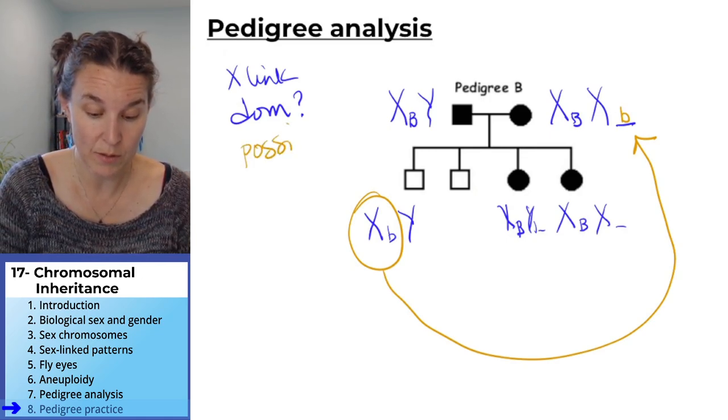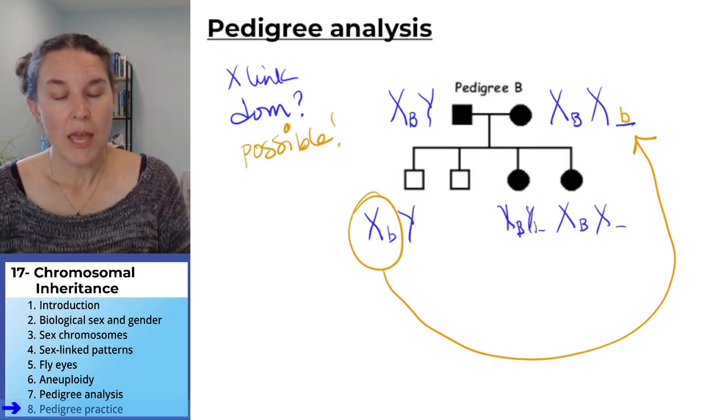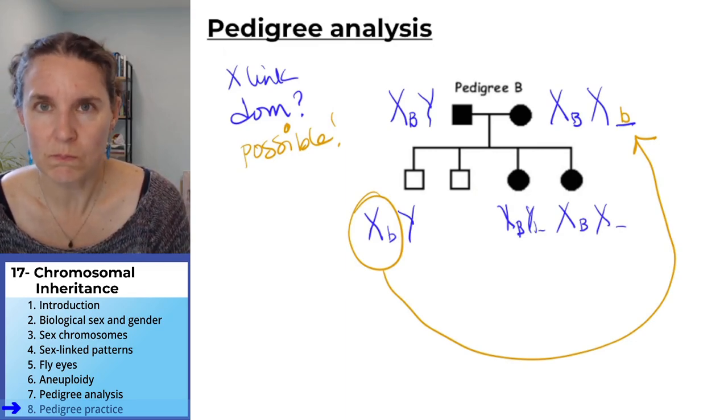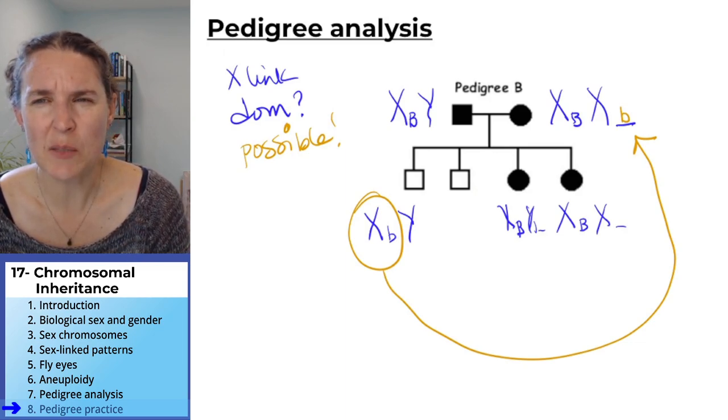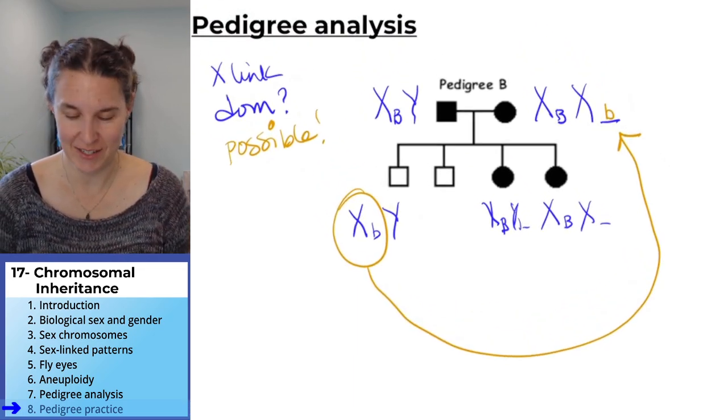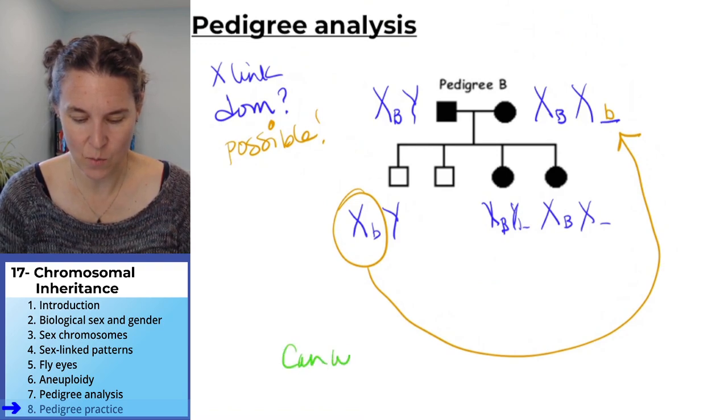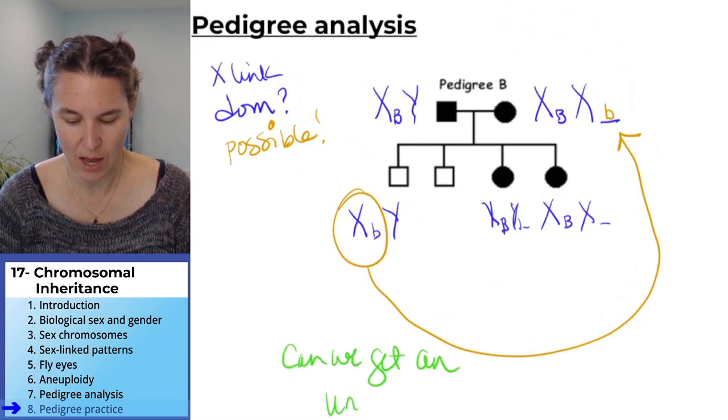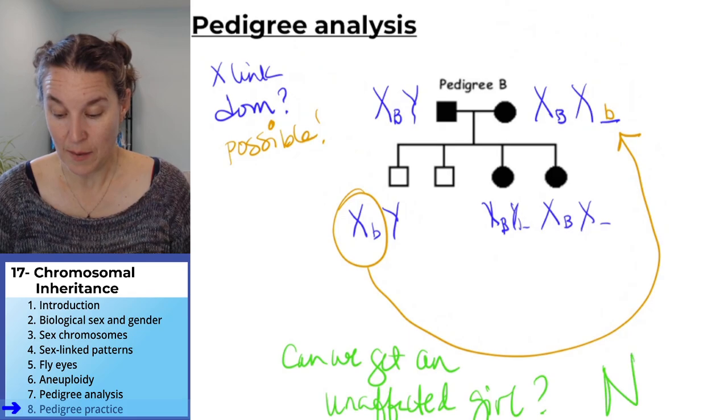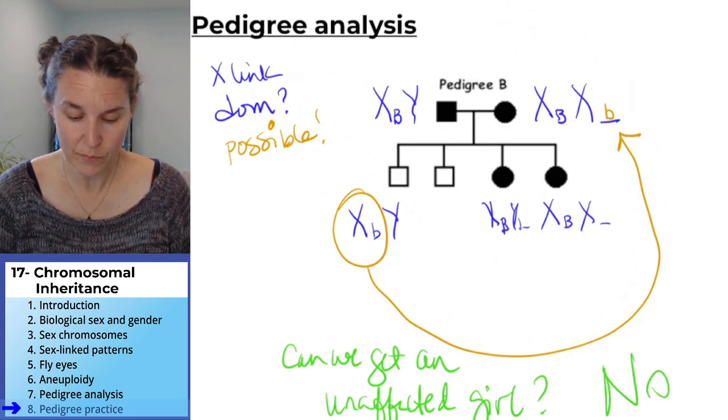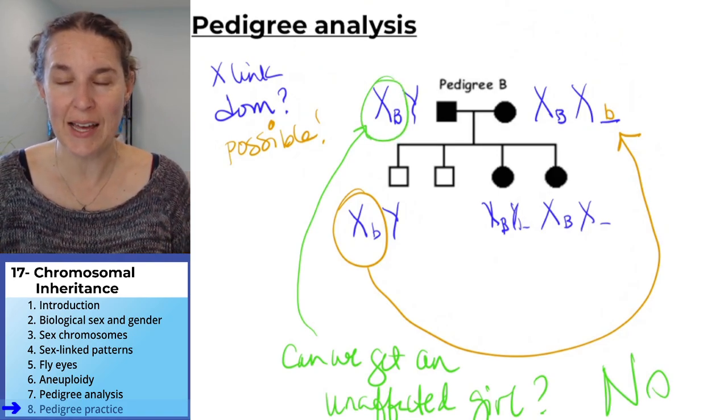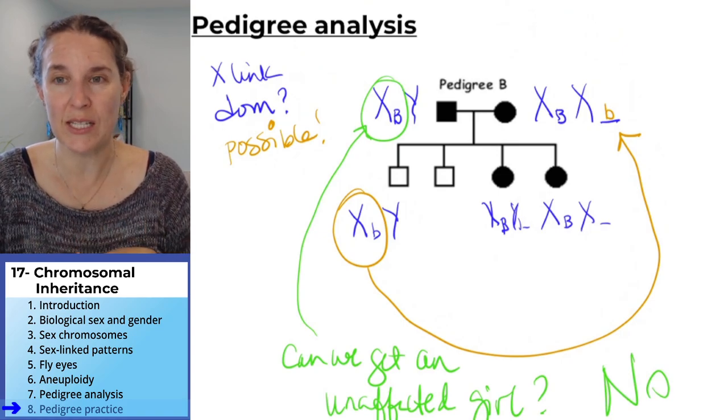Possible. Would it be possible to have an affected boy? Yes. Would it be possible to have an unaffected girl? That's a good question. Can we get an unaffected girl? I'm going to say no, because no matter what, she's going to get at least one of her X chromosomes from her dad who has the allele. So she will express it because it's dominant.